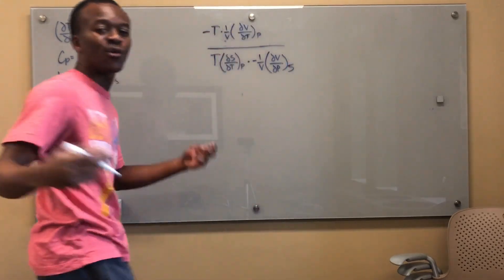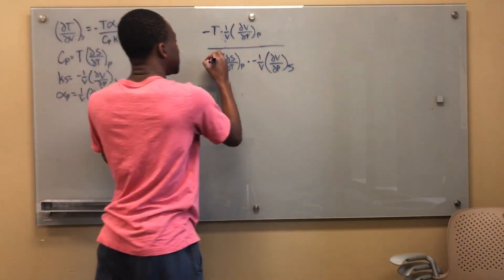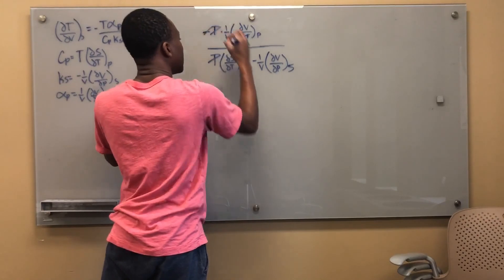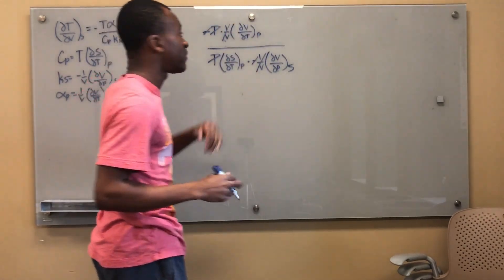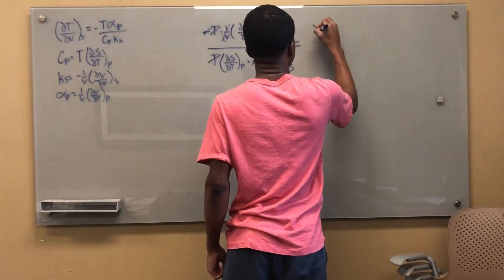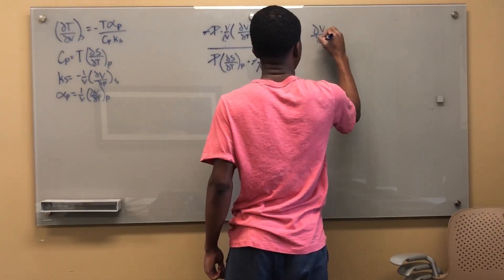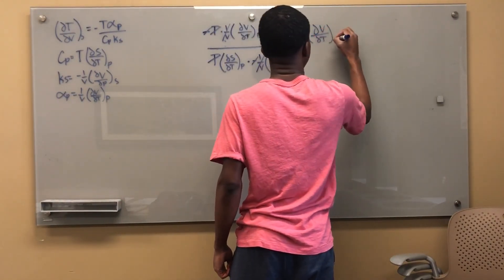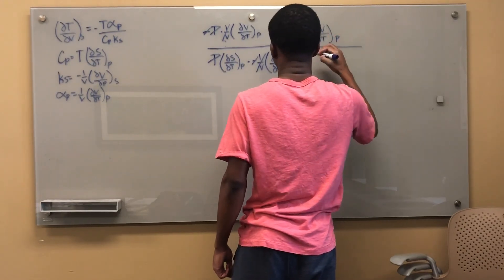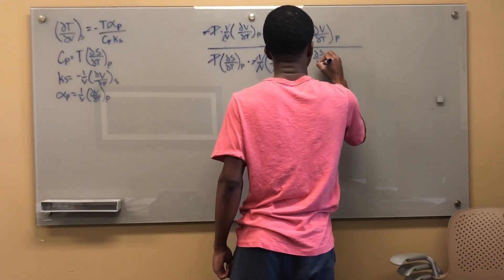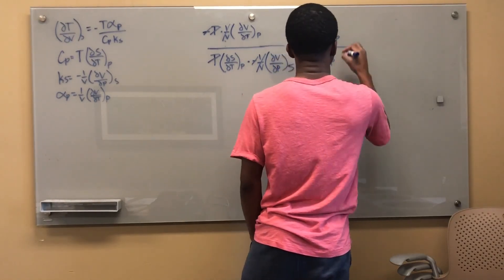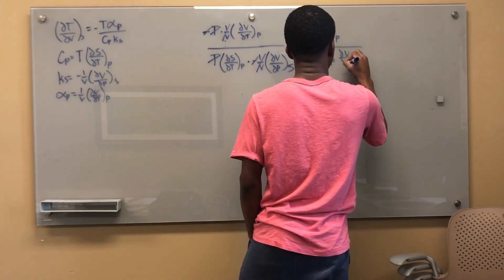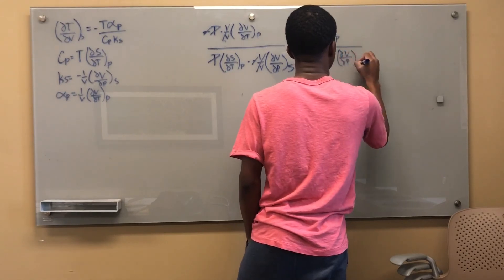Now what can I do here? These T's cancel out, right? This negative cancels with this negative, this one over V cancels with this one over V. So I'm left with del V del T at constant P all over del S del T at constant P times del V del P at constant S.